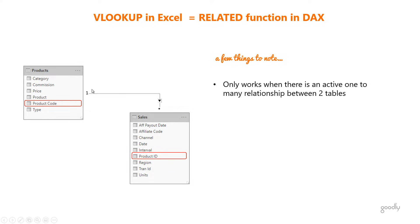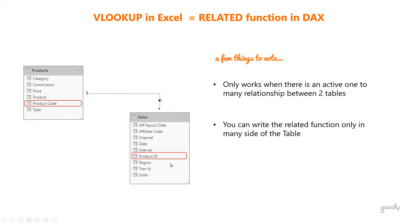This is a one-to-many relationship. In this scenario the RELATED function is going to work just fine. The RELATED function only works in the sales table — just as you would write a VLOOKUP in the sales table to get the price, commission, or category from the products table. So the RELATED function only works on the many side of the relationship.